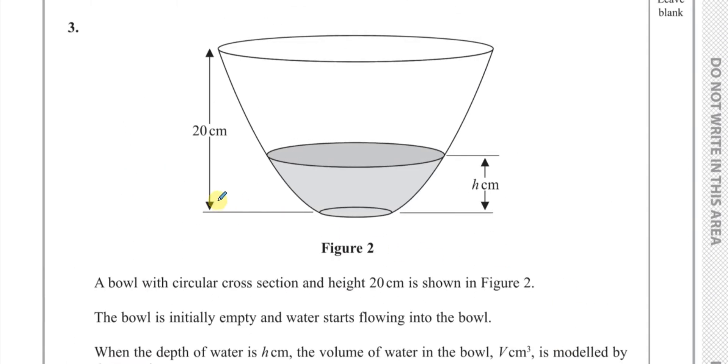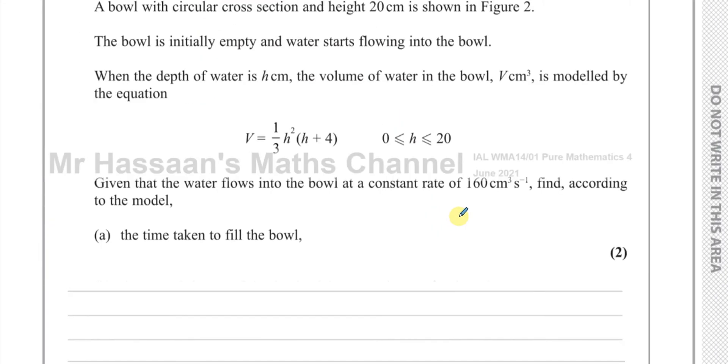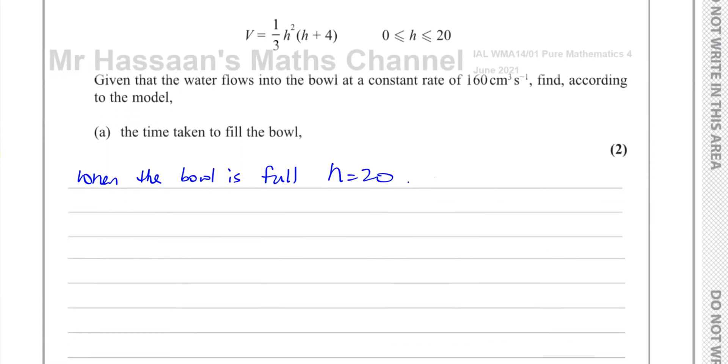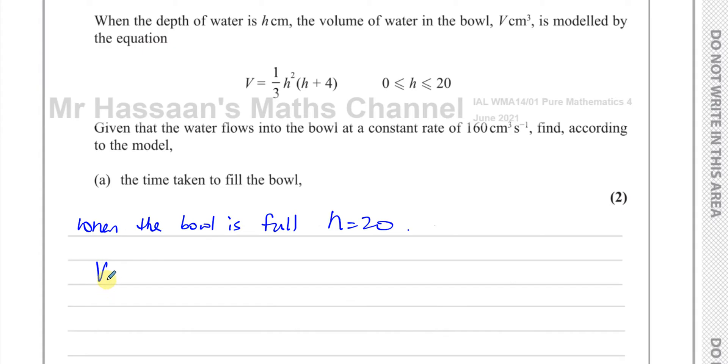So for the bowl to be completely full, the value of h has to be 20 centimeters. When the bowl is full, h is equal to 20. So we can find what the volume of the bowl is when it's completely full. The volume when it's full is going to be a third times 20 squared times 20 plus 4, which is 24. Which is going to be a third times 24 is 8, and that's 400, 20 squared is 400, 400 times 8 is 3,200. So 3,200 centimeters cubed is the volume when it's full.